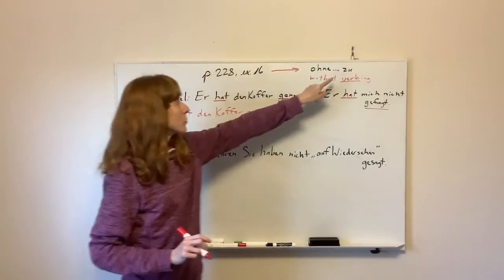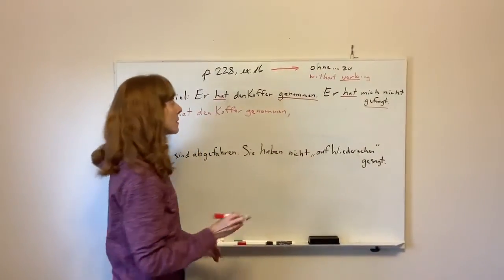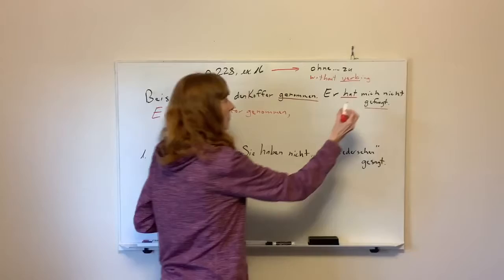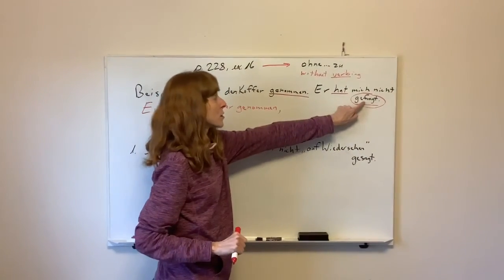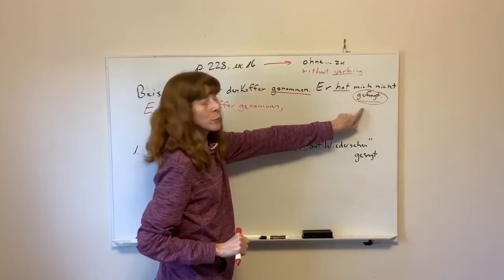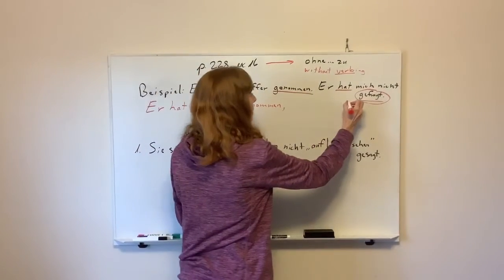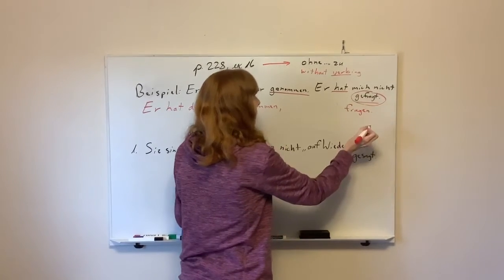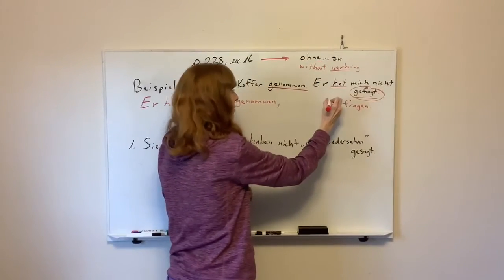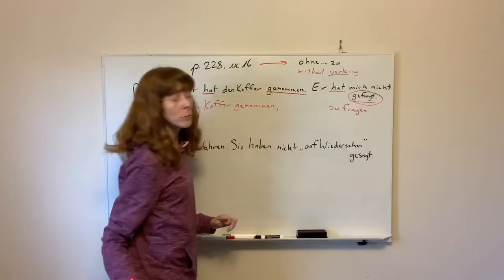And this will work just like an ohne zu phrase. Remember, with these zu phrases, the verb always comes at the end. So the verb we're going to have at the end will be fragen. Remember, this is past tense. We're going to put down the infinitive. So we know that fragen will go way down here at the end. And we also know that the word zu has to come in front of it. So we may as well go ahead and put that down too.